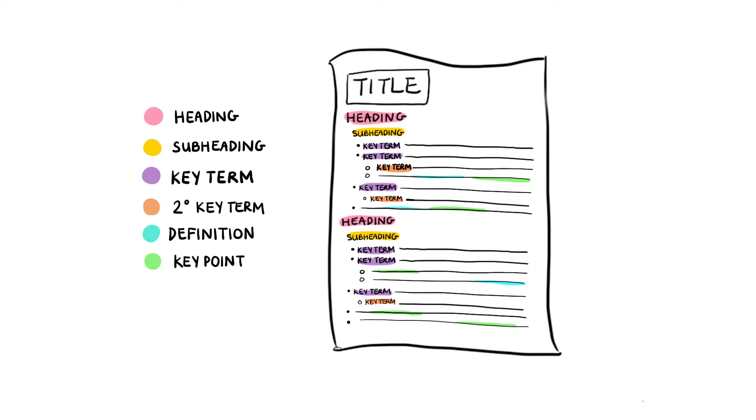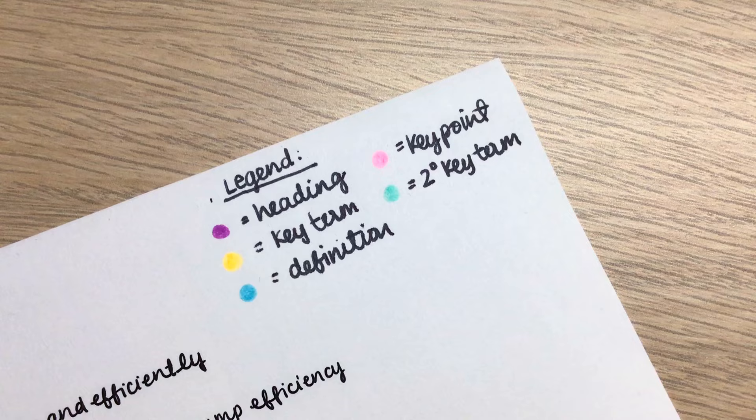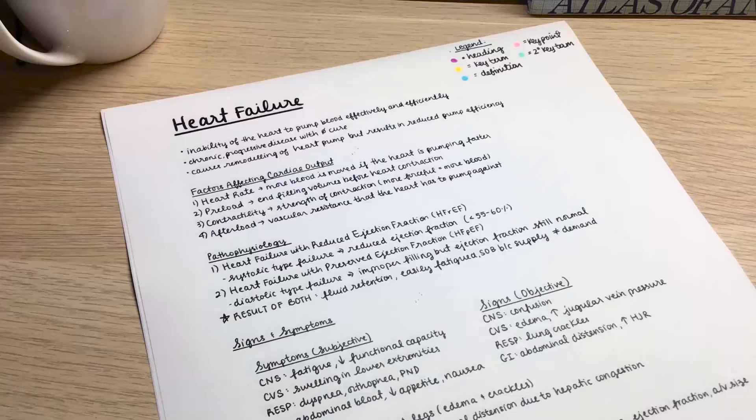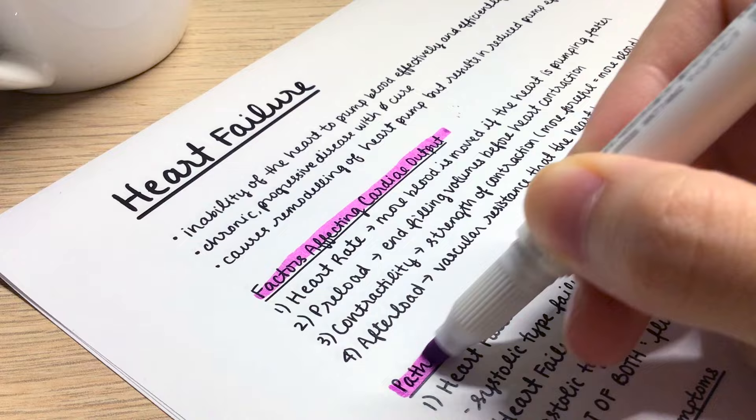Obviously, keeping track of these colors is critical to your understanding of your notes. You can always make a legend on the top of the page, or alternatively put it on a sticky note if you're not doing digital notes and paste it on the page.